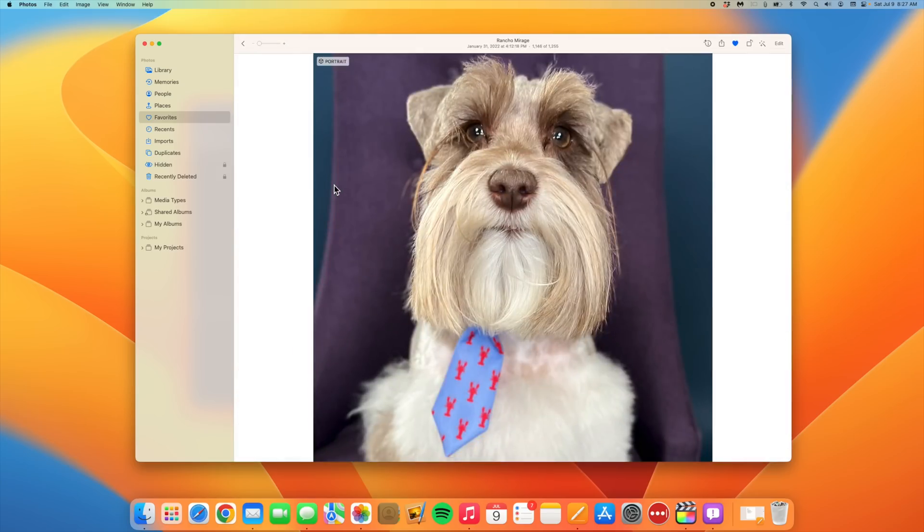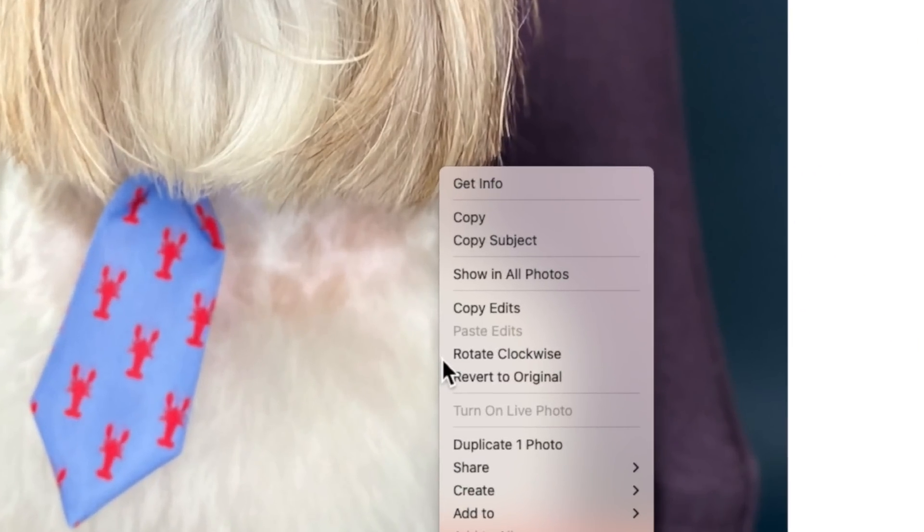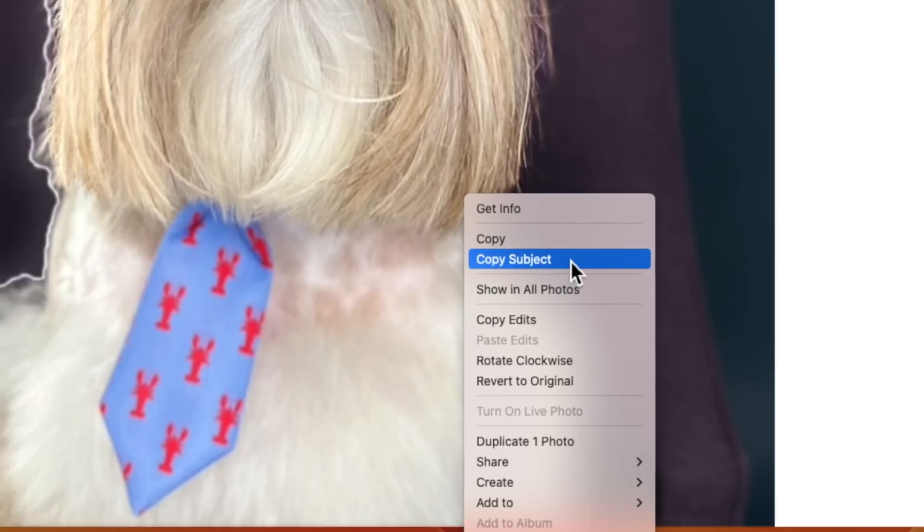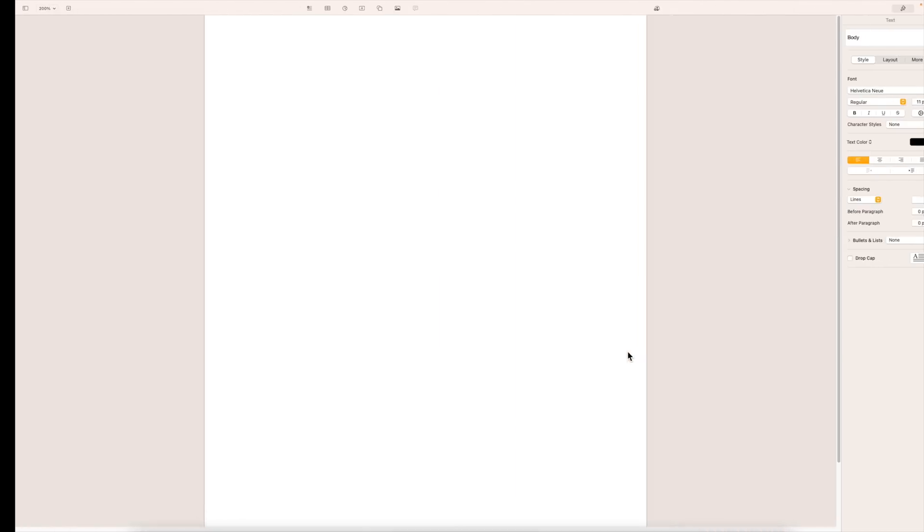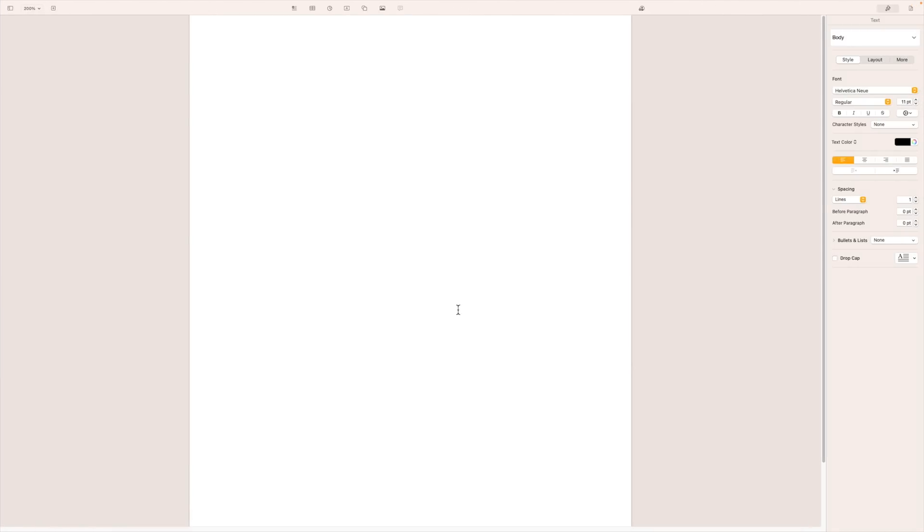One more cool feature in photos, in macOS Ventura, you can secondary click on an image, and in addition to copy, there's also an option to copy just the subject. It then gives me an outline showing the boundary of my subject to the background, and now I'll open up a blank pages document, and when I paste the image, you'll see the background has been removed.